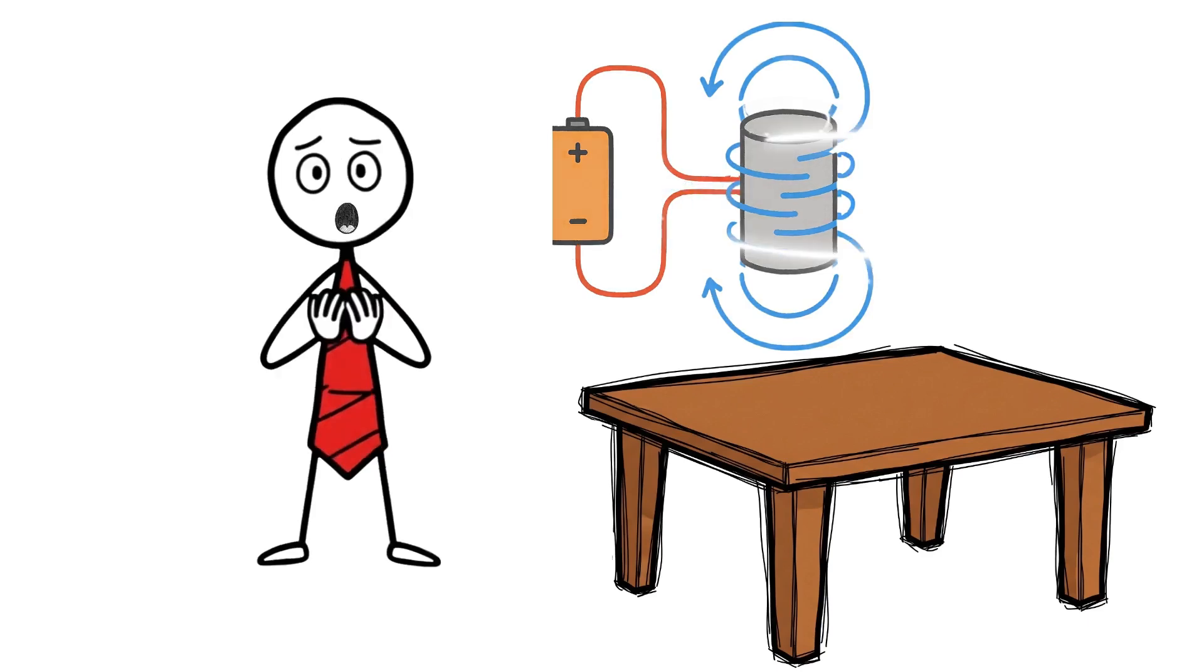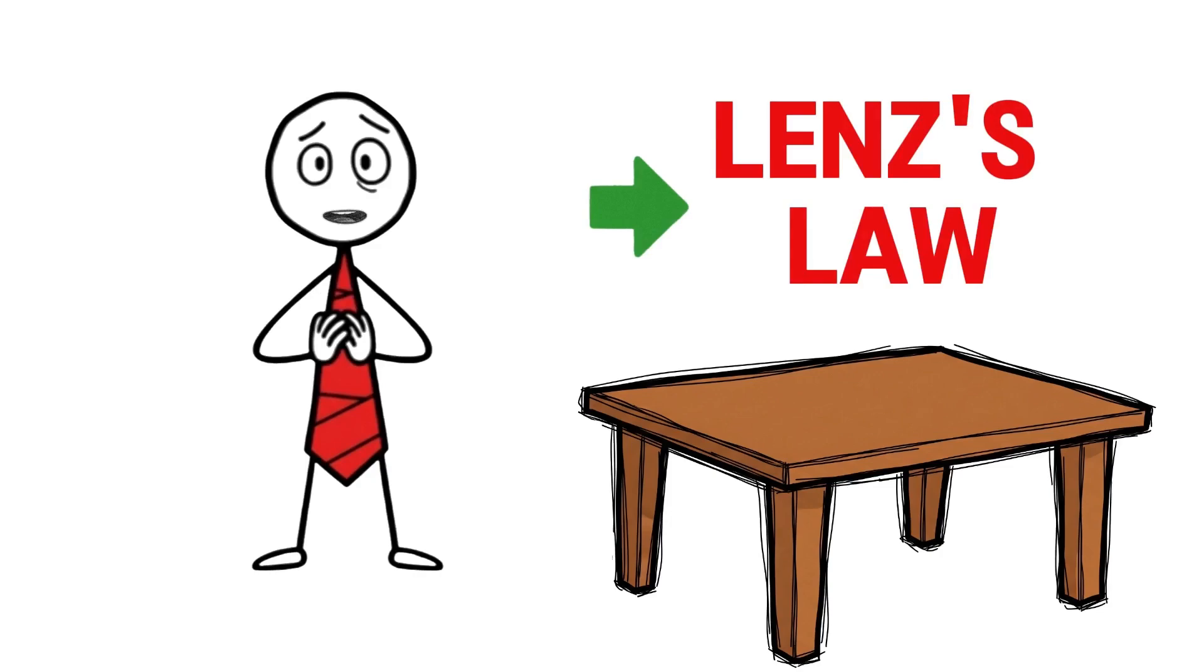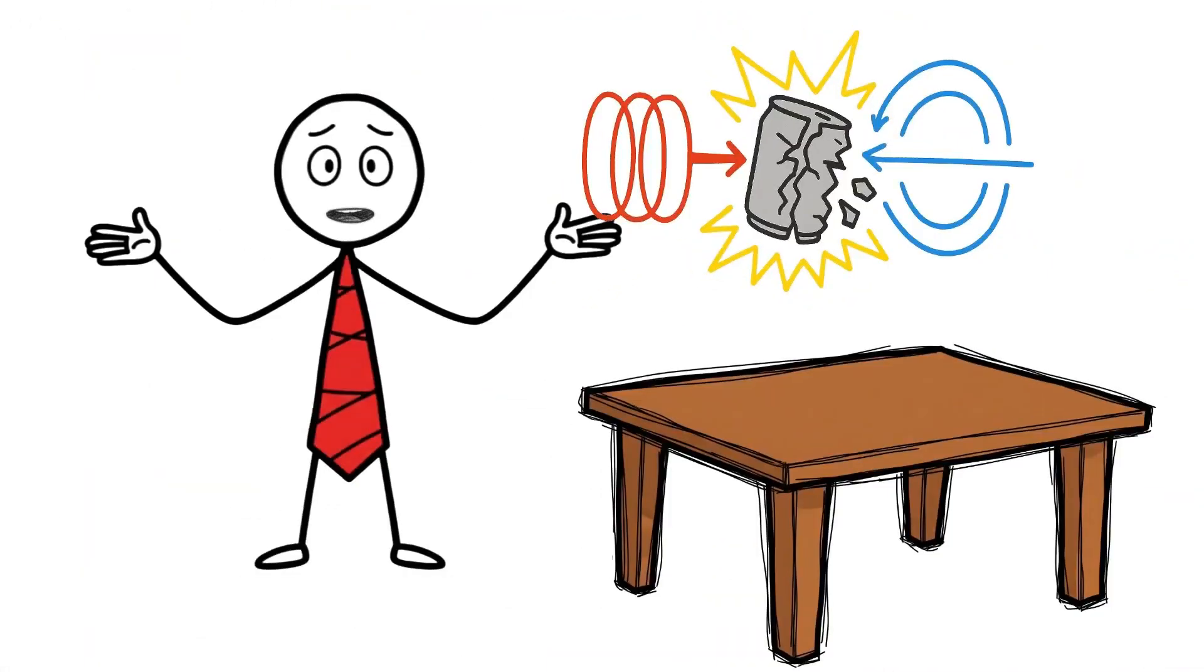So these eddy currents swirling around the can generate a second magnetic field. And here's the kicker. Lenz's Law tells us that this new magnetic field will always oppose the one that created it. The coil's magnetic field pushes inward,